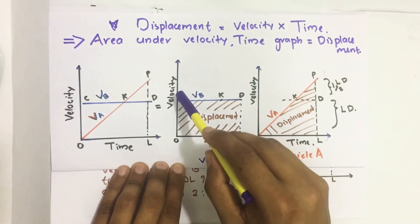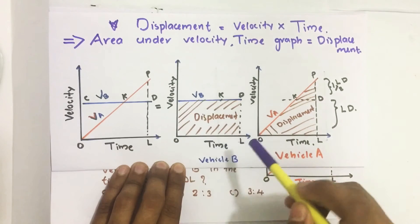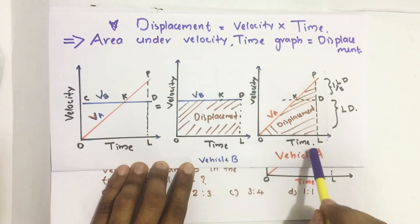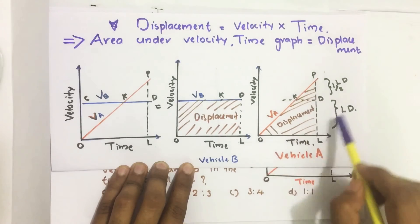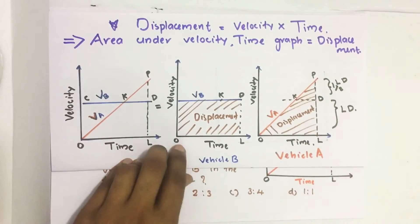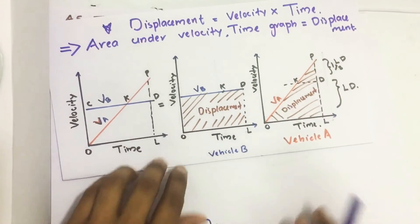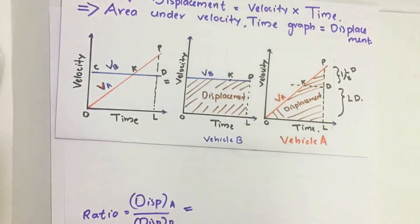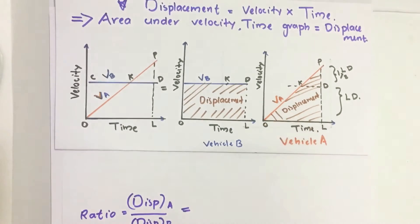Area under velocity time graph for vehicle B is a rectangle, and area under velocity time graph for vehicle A is a triangle. So area under this triangle to this rectangle gives the required answer.